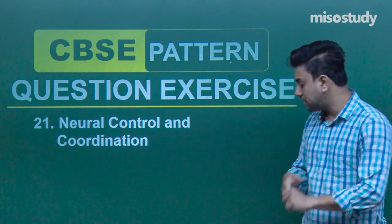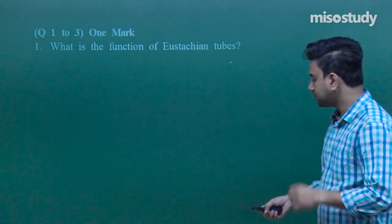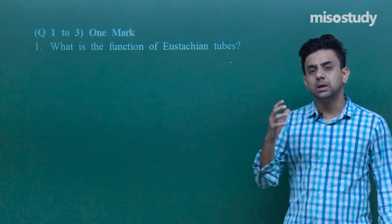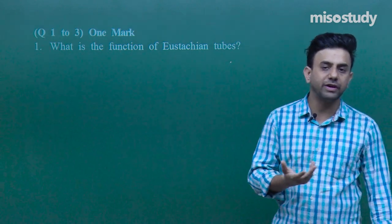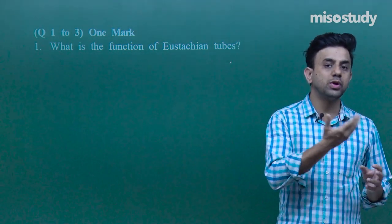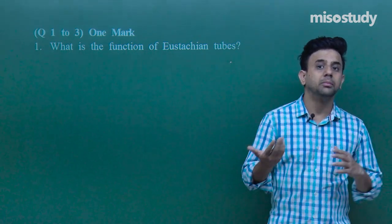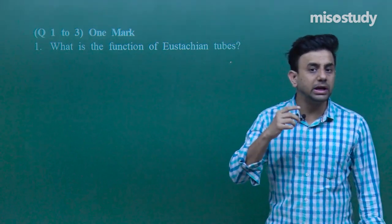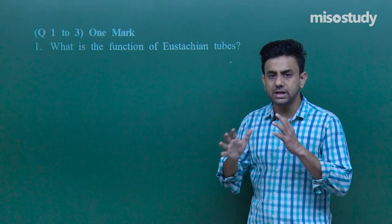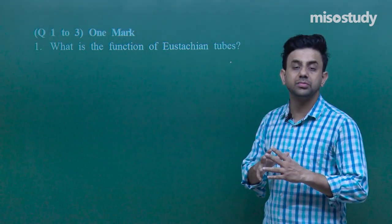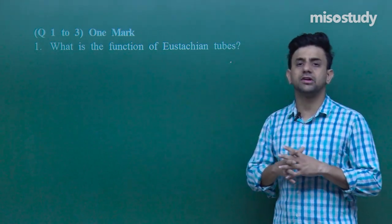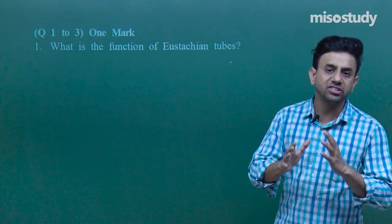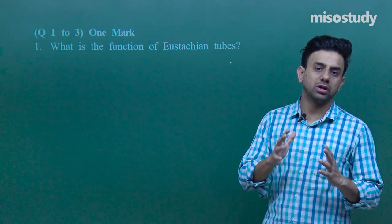What is the function of the Eustachian tube? These Eustachian tubes are present between the middle ear and the nasopharynx. The nasopharynx is that chamber situated behind the nose and the nasal cavity. So the nasopharynx is connected to the middle ear by means of the Eustachian tube, which makes sure that the air pressure on both sides of the middle ear is well balanced.